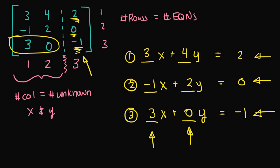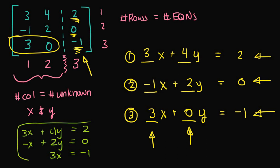So, we have our equations. I'm just going to simplify these three equations, since we have some 0 terms and a negative 1 coefficient. Our first equation is 3x plus 4y is equal to 2. Then we have negative x plus 2y is equal to 0. And finally, 3x is equal to negative 1. This is the system of linear equations that corresponds to this augmented matrix.